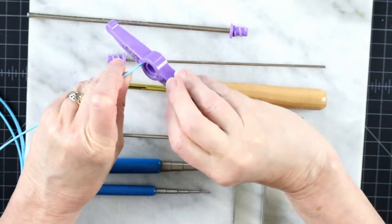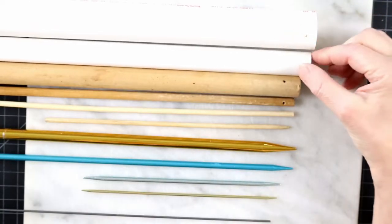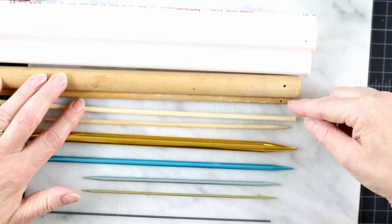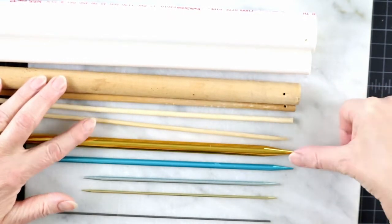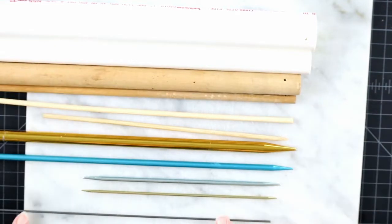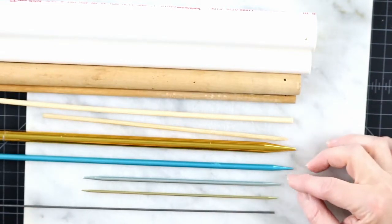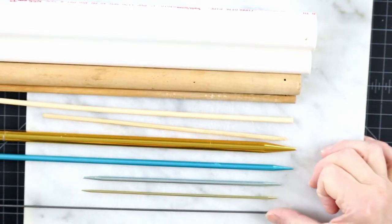However, all you really need is something straight with a hole in it. Thin plumbing pipes or wooden dowels will do just fine. Also, knitting needles are good and come in all convenient sizes.